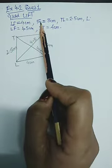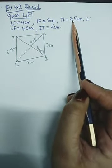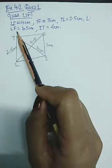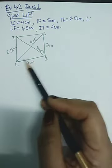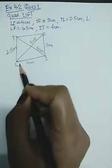is 4 cm, IF is 3 cm, TL is 2.5 cm, LF is 4.5, IT is 4 cm. So I have drawn first a rough sketch.